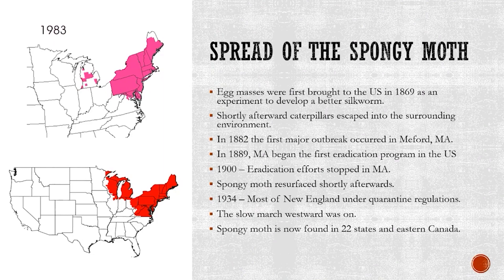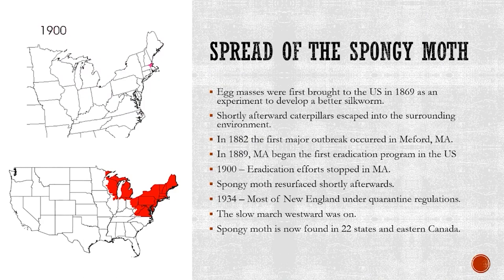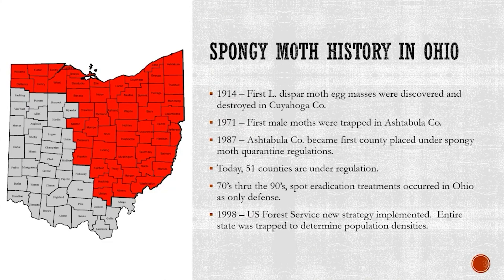By the 1930s, most of New England was under quarantine regulations, and spongy moth continued to spread westward and southwest to the current day, where we have 22 states and much of eastern Canada where spongy moth can be found. Here in Ohio, the first detections of spongy moth were egg masses found in Cuyahoga County and then later destroyed. The first male moths trapped in Ohio were in Ashtabula County, which is in the northeast corner of the state. In the 80s, Ashtabula County became the first county in Ohio to be placed under a spongy moth quarantine.